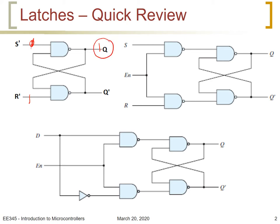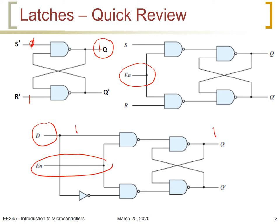We went on to providing an enable input to the latch, so that the enable input will make the latch either enabled or disabled. After that, we went from the SR latch to design the D latch or data latch, which we also called a transparent latch. Simply, when the latch is enabled, the data will be passed to the output — if D is 1, output is 1; if D is 0, output is 0.